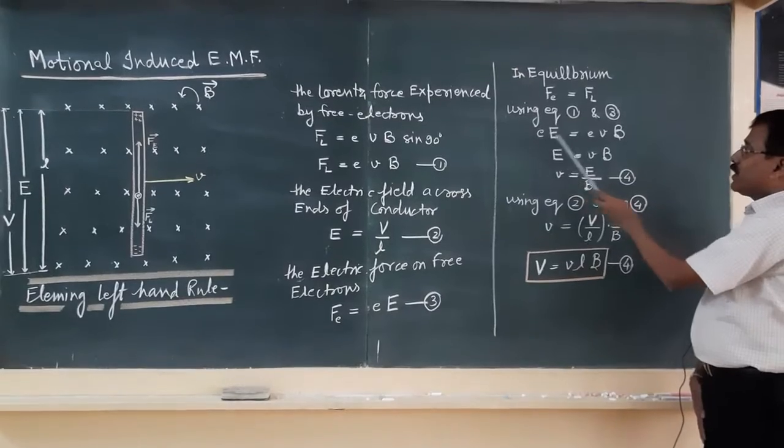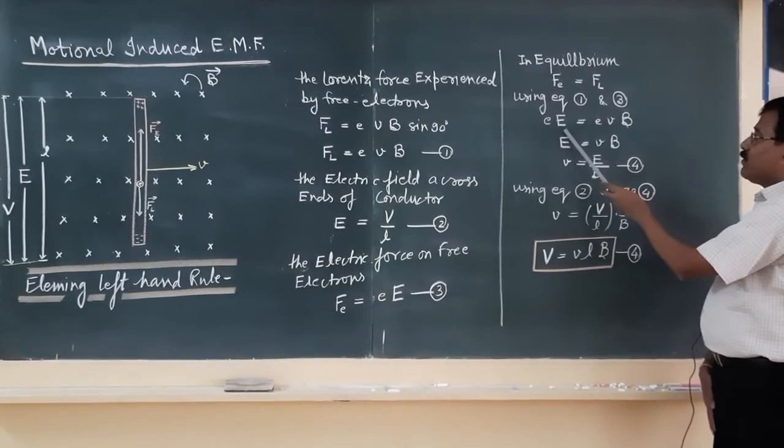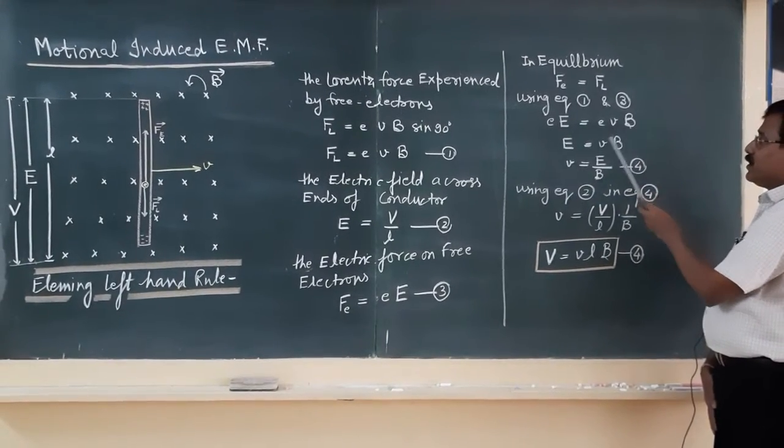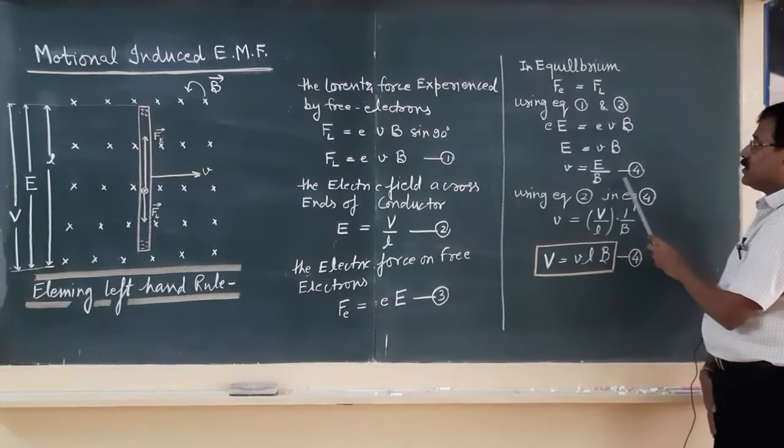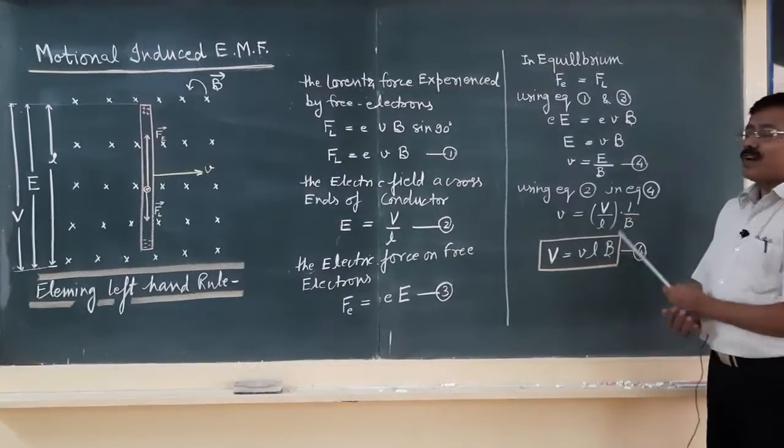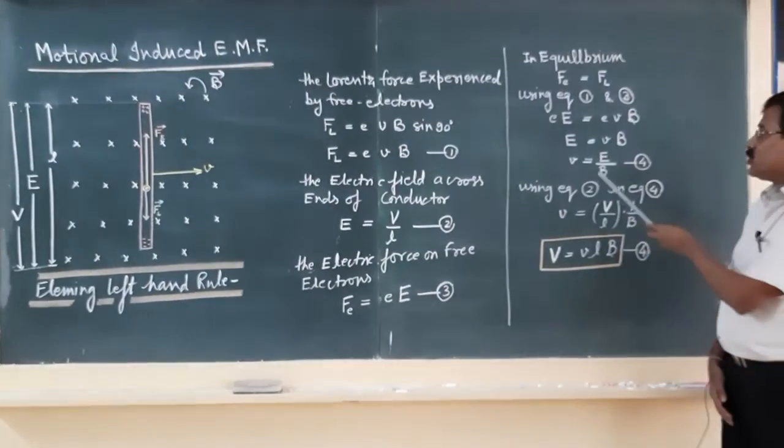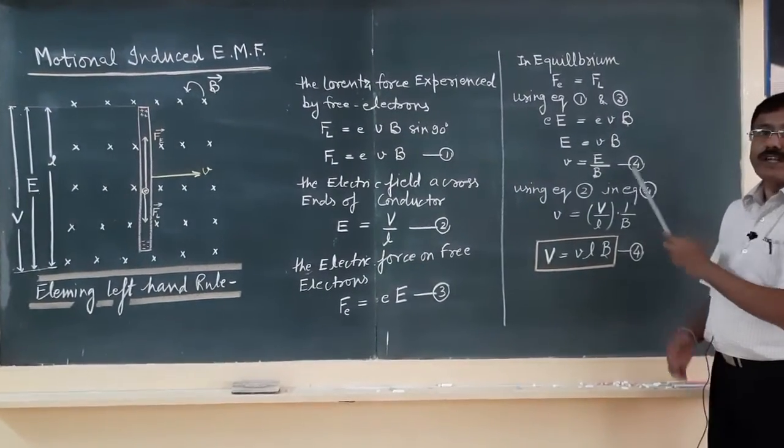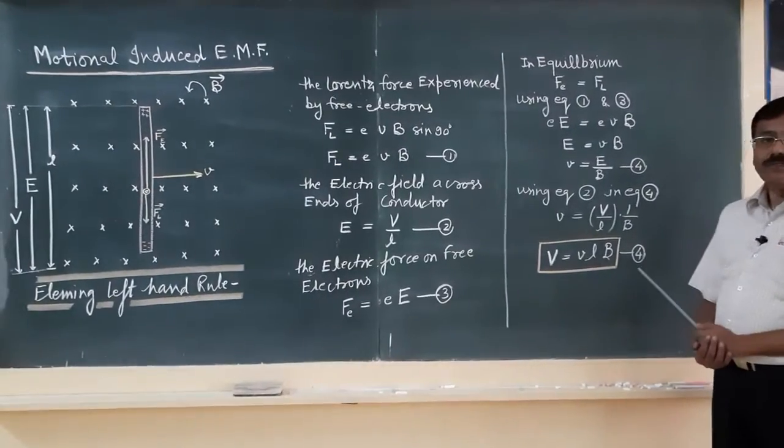So, the electric charge will cancel out. It will be E equals vB, that is v equals E by B. This is a very important formula. It means velocity of the conductor is simply the ratio of electric field and the applied magnetic field.